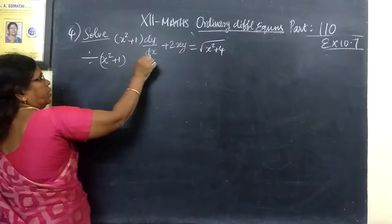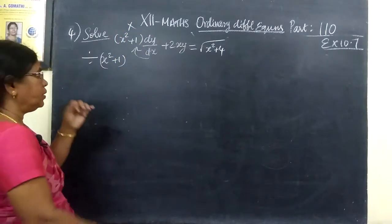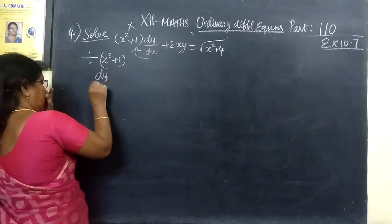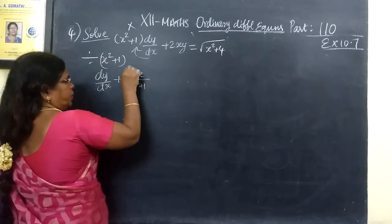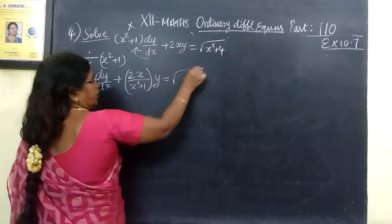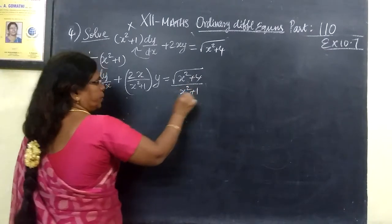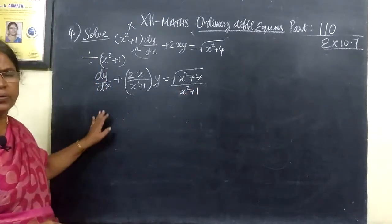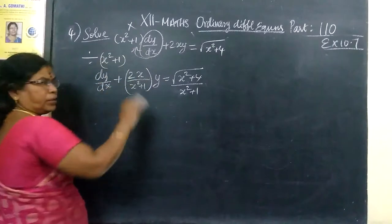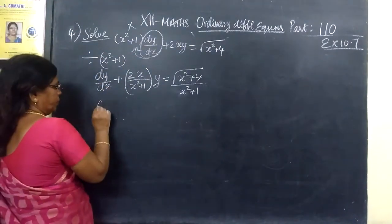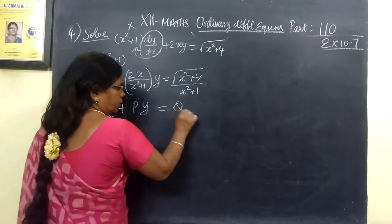Divide by x squared plus 1. Divide by dx. This is x squared plus 1. The other way we have to compare, by x squared plus 1. So what do we do? Divide by x squared plus 1. Divide by dx.